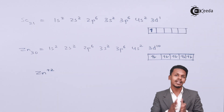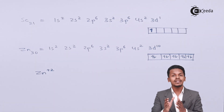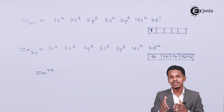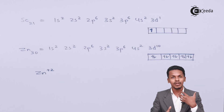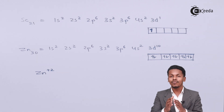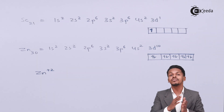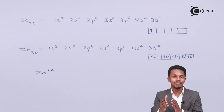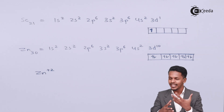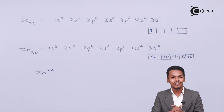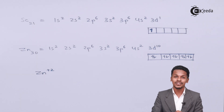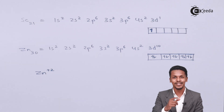So, scandium is a transition element but zinc is not. In brief, transition elements are those elements which have properties intermediate between s-block elements and p-block elements. S-block elements are very electropositive, while most p-block elements are electronegative. Transition elements have properties in between, which is why they are called transition elements. Thank you friends for watching; I hope you understood what transition elements are.